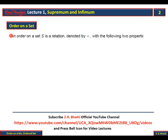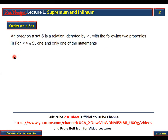Let's start with the definition of order on a set. An order on a set S is a relation denoted by 'less than', with the following two properties. For any x, y belonging to S, one and only one of the following statements is true: x is less than y, x is equal to y, or y is less than x.